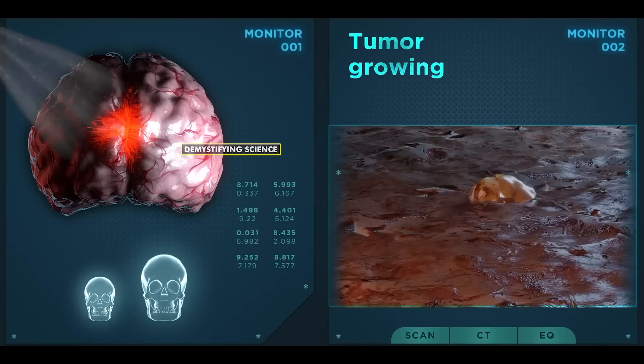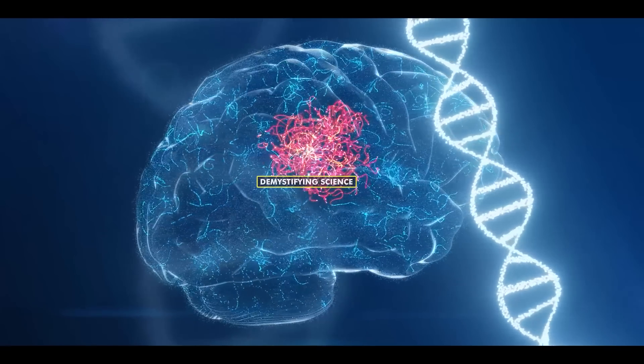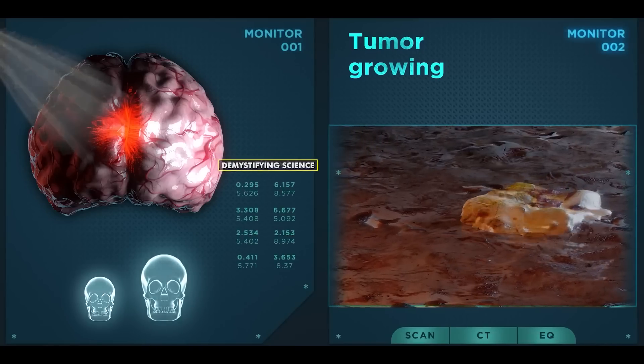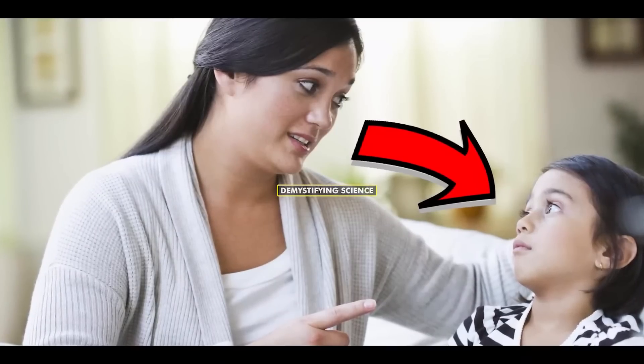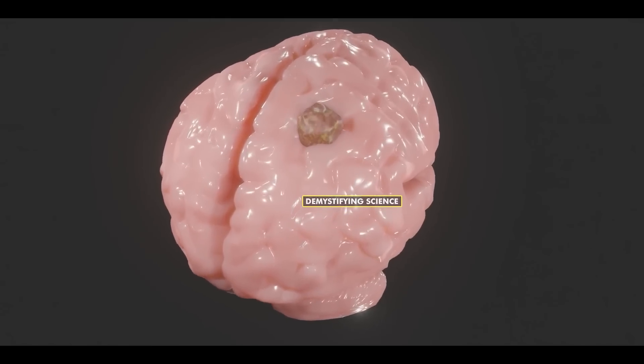However, if brain cells are exposed to radiations like x-rays, mutations can occur within the DNA of the cells, leading to the formation of tumors. Additionally, hereditary problems transferred from parents to offspring can also cause brain tumors.